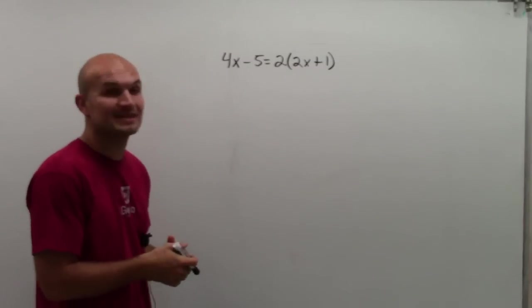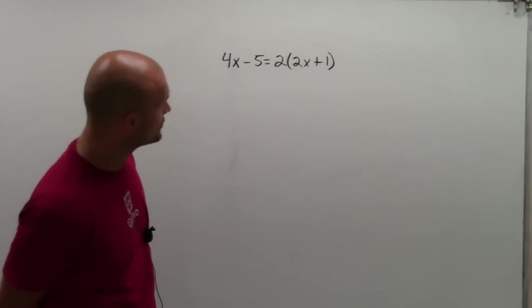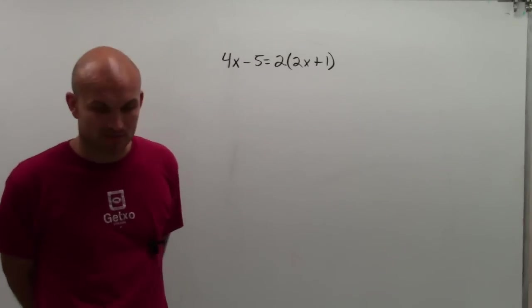Welcome. What I'm going to do is we're going to solve for the value of x. So here I have 4x minus 5 equals 2 times parentheses 2x plus 1.